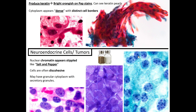Moving on to neuroendocrine cells and neuroendocrine tumors: the classic salt-and-pepper chromatin is the hallmark of the nucleus, and you can see that neuroendocrine-type chromatin here — a tip-off that you're working with something in the neuroendocrine category. Those cells are often discohesive, meaning they don't stick together, similar to lymphocytes, which also like to keep their space on cytology.